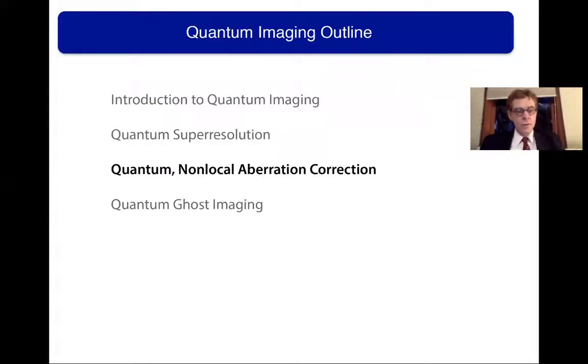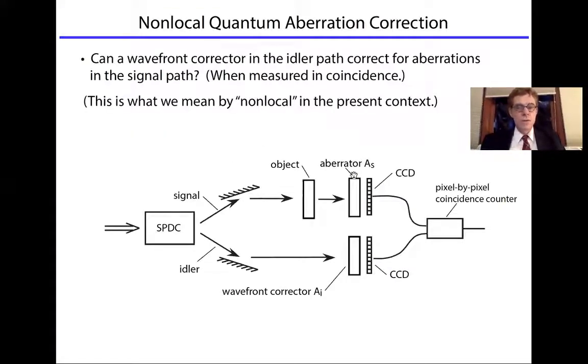Let me go to the next topic. This is quantum non-local aberration correction. And just to motivate this, the question is, can a wavefront corrector placed in the idler path correct for aberrations in the signal path? And I'm thinking that we are measuring now in coincidence.